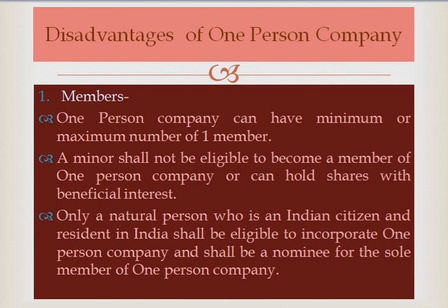First, remember: a One Person Company can have a minimum and maximum of one member. A minor shall not be eligible to become a member of a One Person Company or hold shares with beneficial interest. Only a natural person who is an Indian citizen and resident in India shall be eligible to incorporate a One Person Company and shall be the nominee for the sole member.